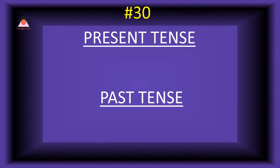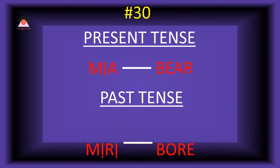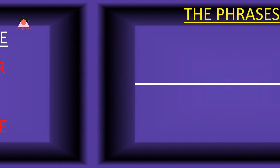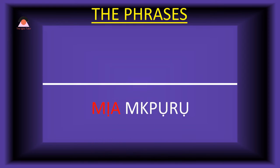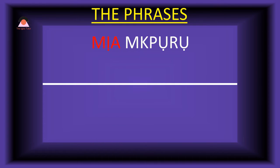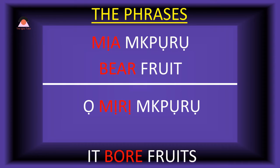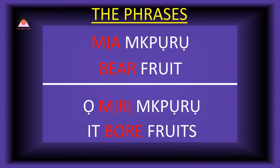Word number thirty: 'meya,' which means 'bear' as in fruits. The past tense is 'mere,' meaning 'bore.' Present tense phrase: 'meya m'oro' — bear fruits. Past tense: 'o-mere m'oro' — it bore fruits.